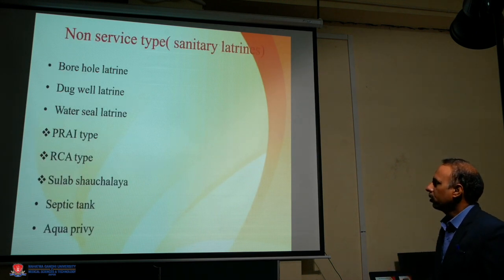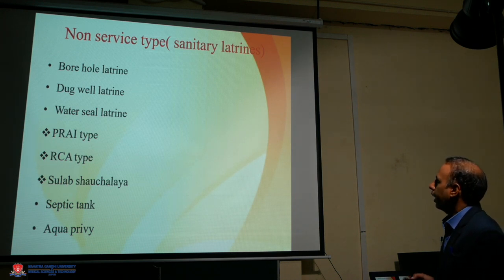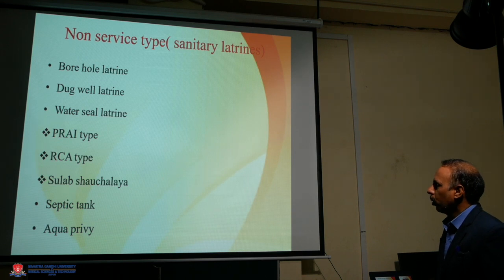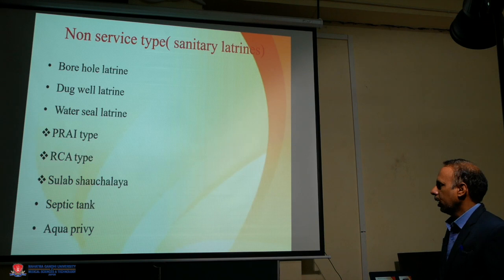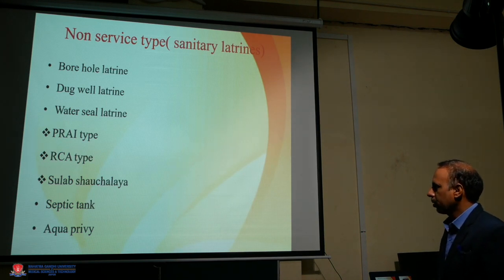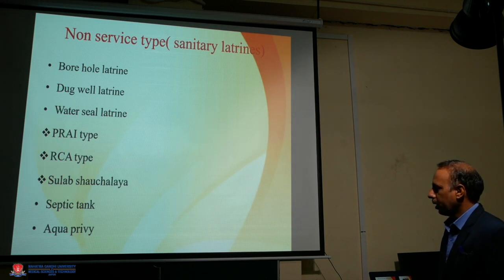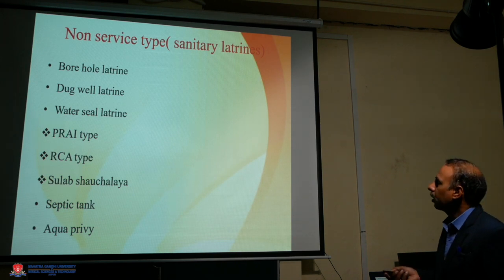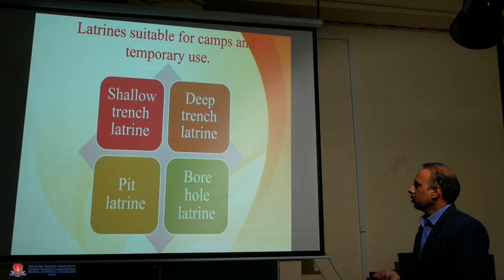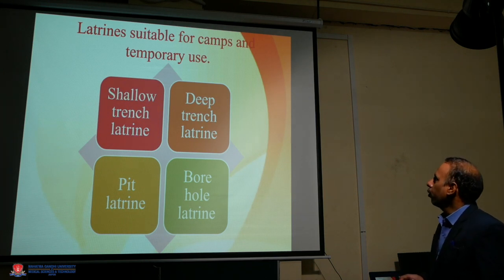First, we describe the non-service type or sanitary latrines. Sanitary latrines include: borehole latrine, dug well latrine, water seal latrine. Water seal latrine is also of two types: PRA type and RCA type. The fourth one is the septic tank, and the fifth is the aqua privy.